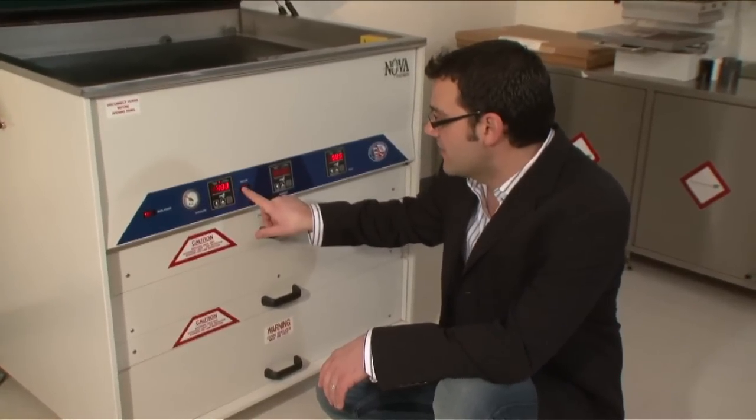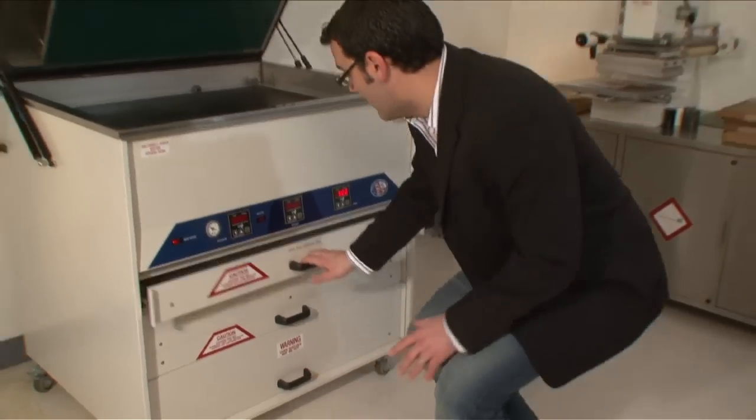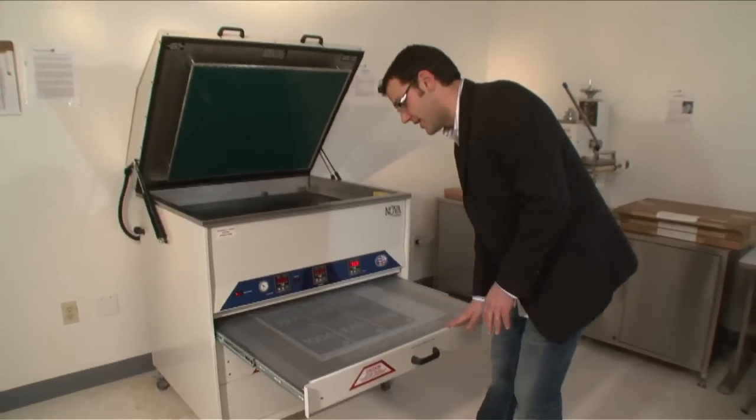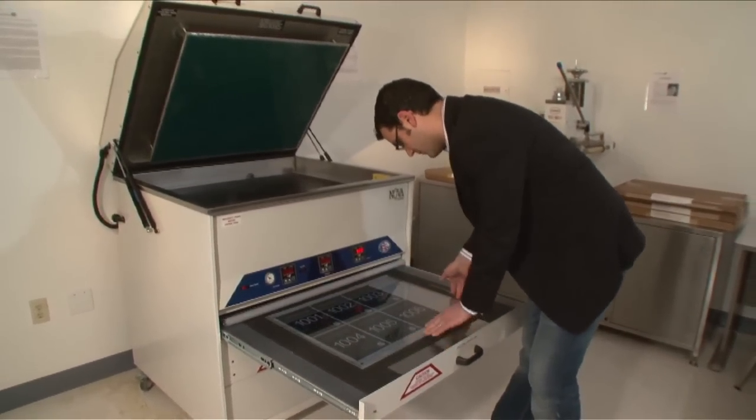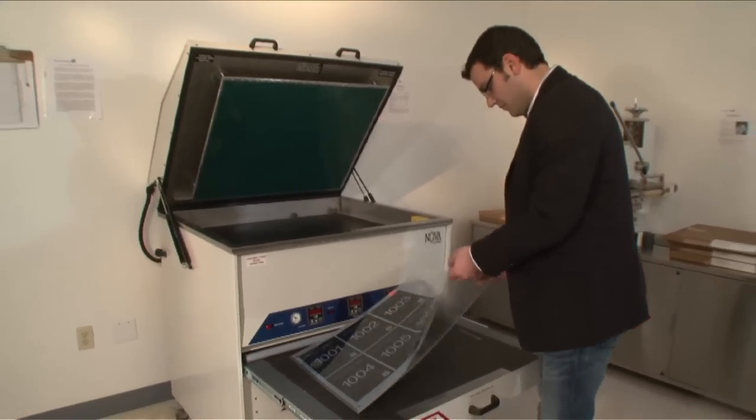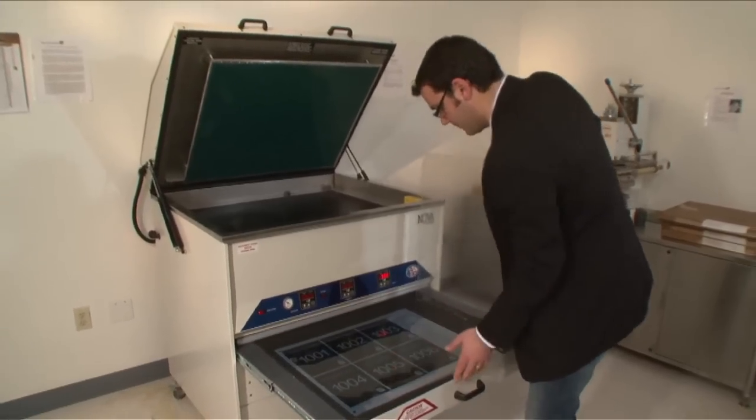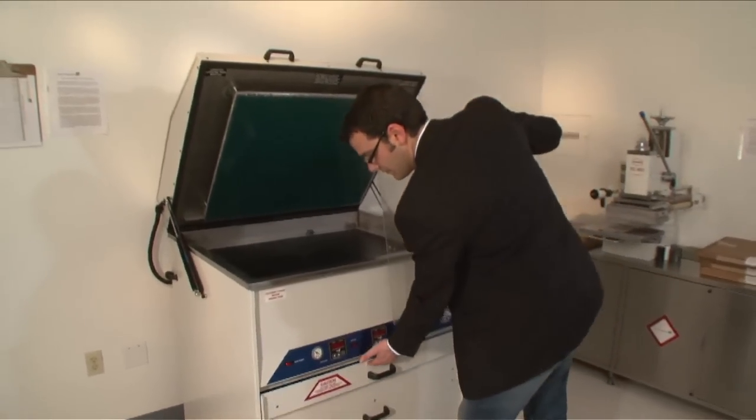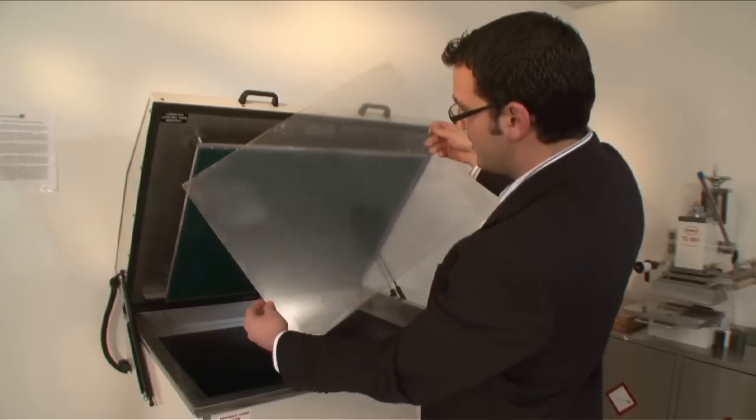We turn off the vacuum and we're going to take the sheet of photopolymer and place it in the washout tank. Keep our film negative here. We can actually take a look at it and visually inspect and see the images actually were exposed into the polymer.